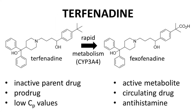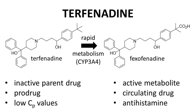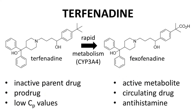The HERG story starts with terfenadine. Terfenadine was a drug that reached the market in the middle 1980s. Terfenadine itself is inactive but undergoes rapid metabolism in the body, specifically by the 3A4 isoform of cytochrome P450, to form an active metabolite, fexofenadine. Therefore, terfenadine is an example of a prodrug, and its circulating plasma levels are quite low because of rapid metabolism.